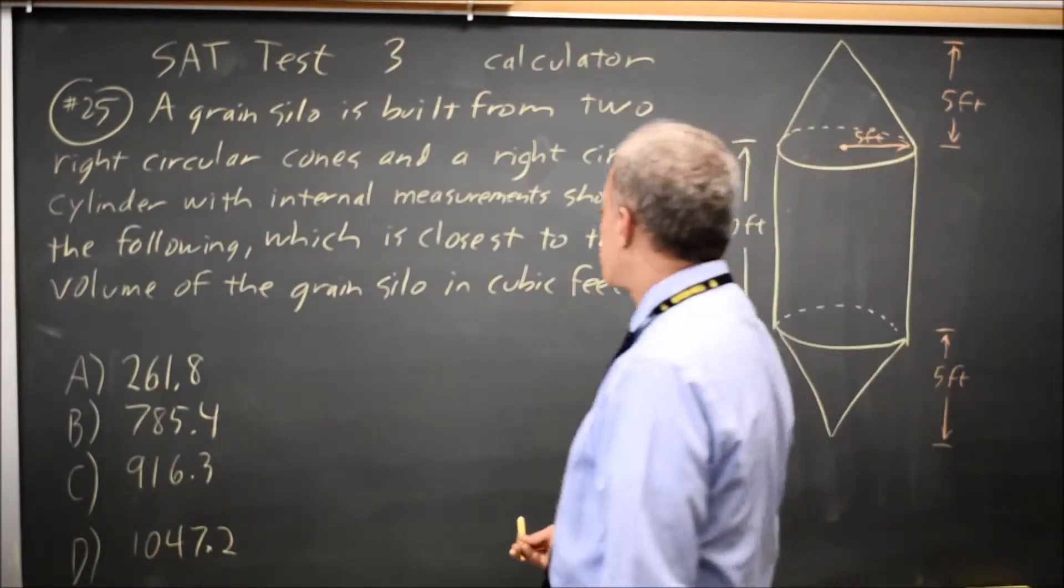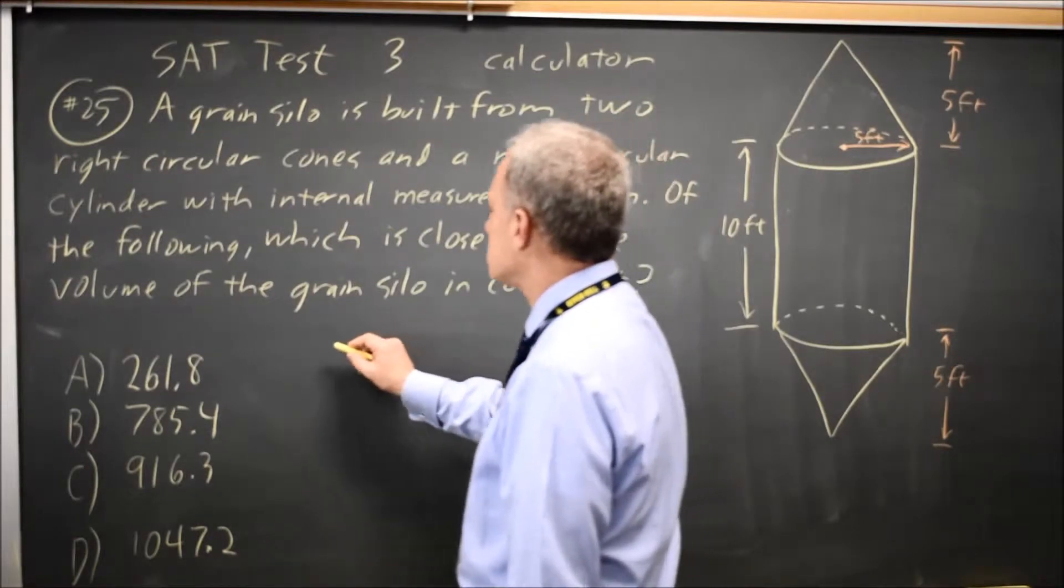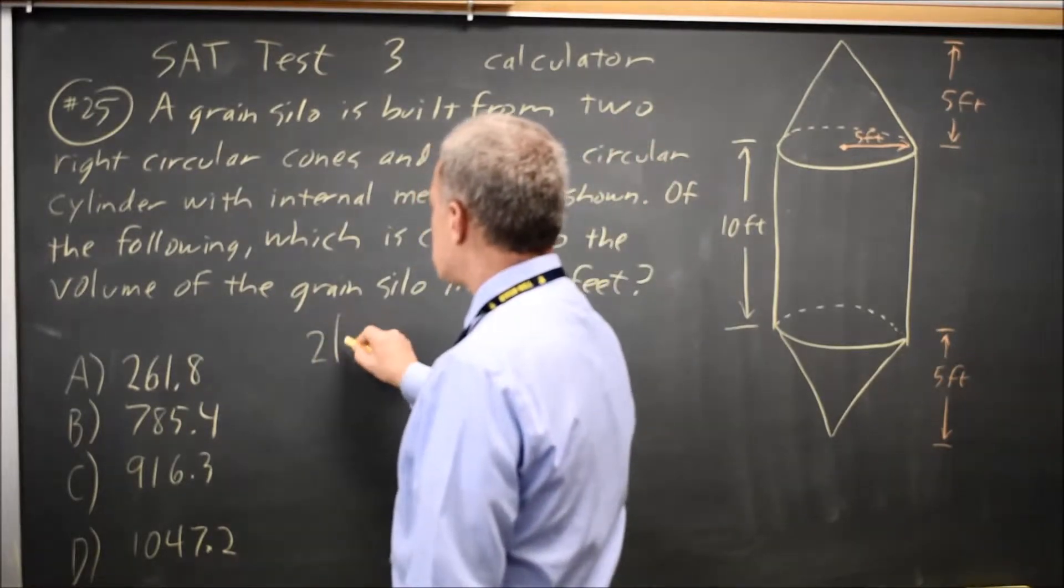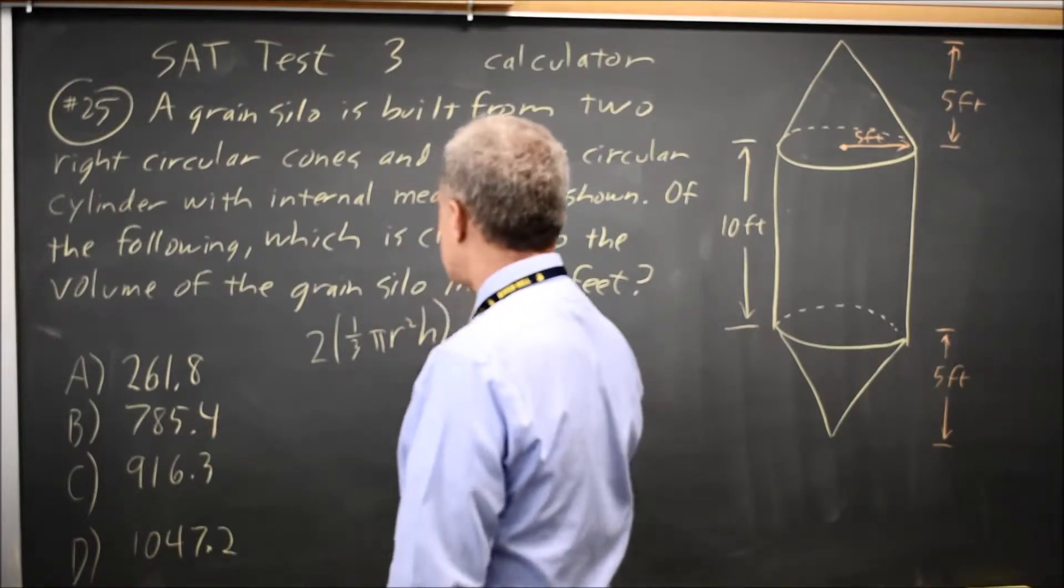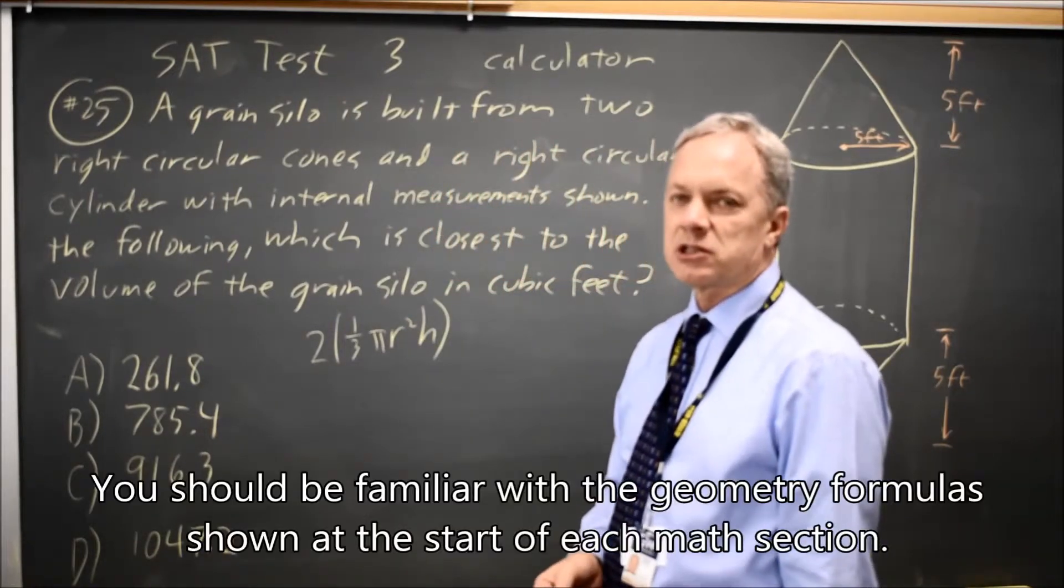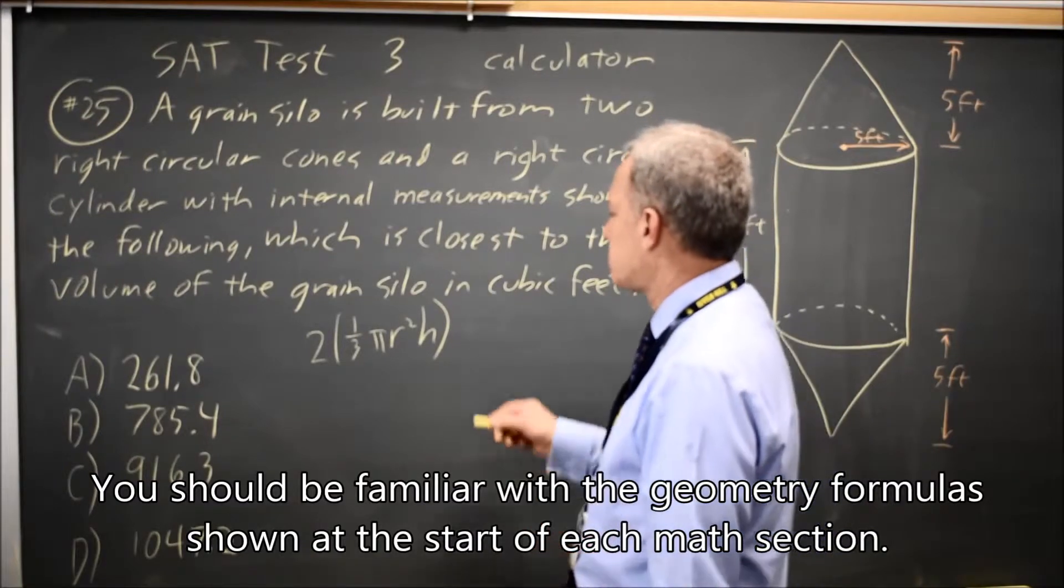To find the volume of the grain silo, we have two cones. Each cone is 1/3 π r² h. That formula is given at the front, at the start of each math section.